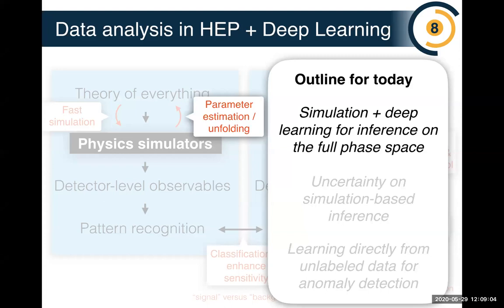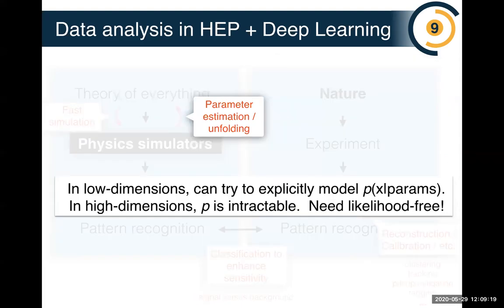The example from simulation-based inference will be unfolding — not exactly parameter estimation for a single parameter, but I'll explain what that means. We have some theory with parameters and a phase space X we'd like to observe, and we want to infer the parameters given that feature space. In low dimensions you can try to explicitly model P(X|parameters) and do maximum likelihood, but in high dimensions P is intractable — if X is a thousand dimensions, or even a variable number of dimensions of order a thousand, you need likelihood-free approaches.